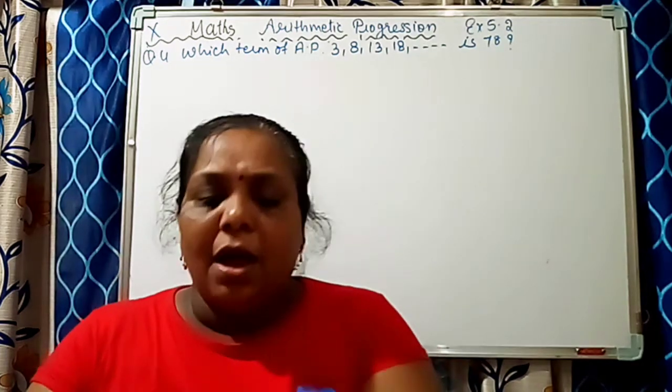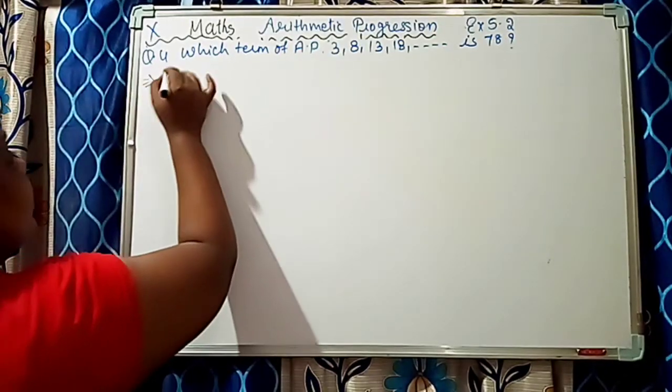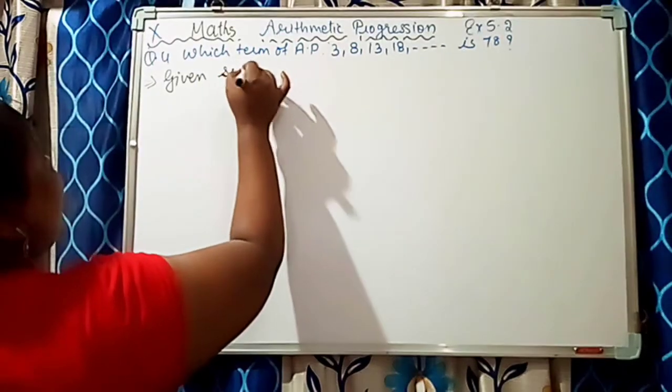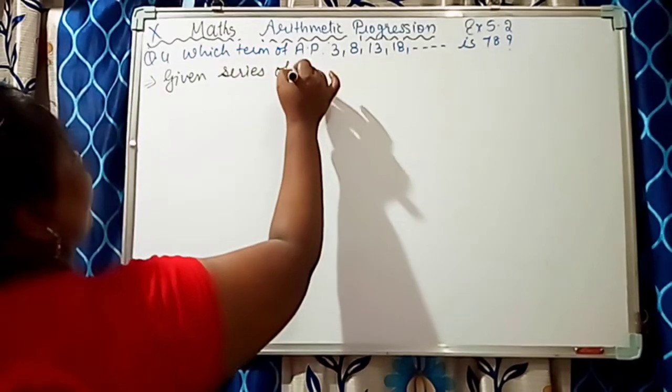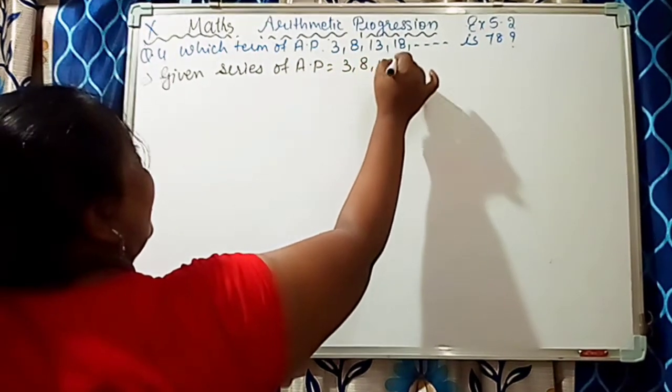And AN means 78. We have to find out in which series the 78 number will be coming. So here we will see the given series of AP is 3, 8, 13, and 18.